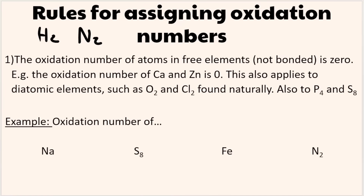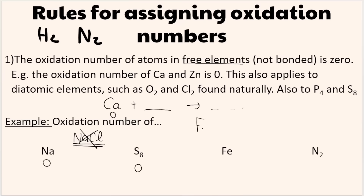Rule 1: the oxidation number of atoms in free elements — things that are not bonded — is zero. For example, in a reaction where Ca is not bonded and standing by itself, its oxidation number is zero. This rule also applies to diatomic elements like O₂, Cl₂, H₂, N₂, and also to things like P₄ and S₈. So sodium by itself is zero, S₈ is zero, iron by itself is zero — not FeCl₃, just iron standing alone — and N₂ by itself is zero.